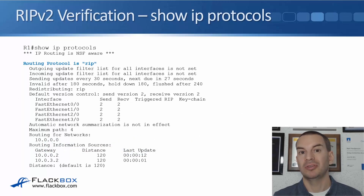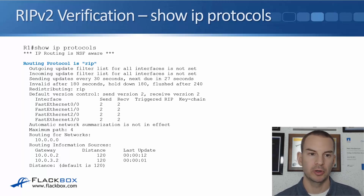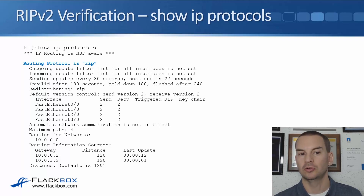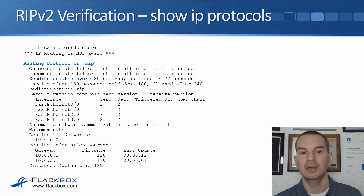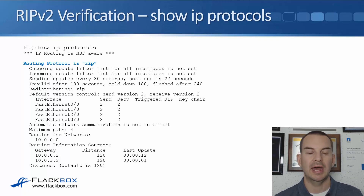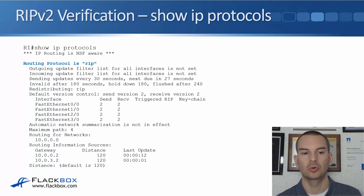To verify RIP — or any routing protocol running on a router — we can use 'show ip protocols'. In the example, we can see the routing protocol is RIP, which interfaces it's running on (Fa0/0, 1/0, 2/0, and 3/0), that it will do equal cost load balancing up to four maximum paths, that it's routing for the 10.0.0.0 network, and that its neighbors are at 10.0.0.2 and 10.0.3.2.